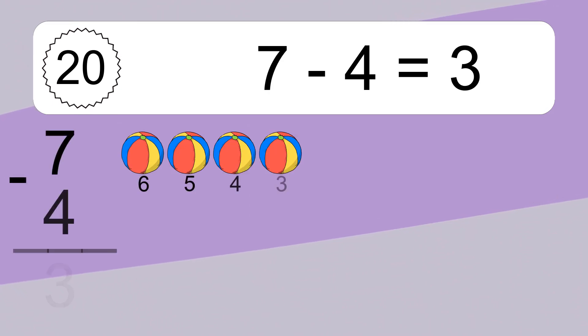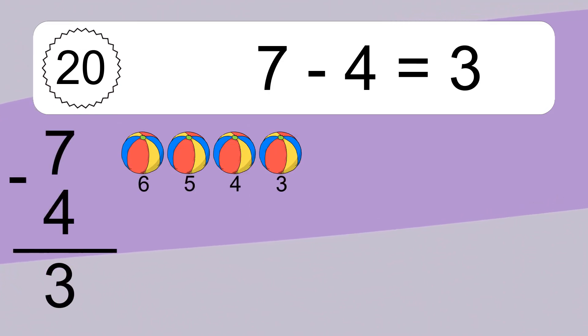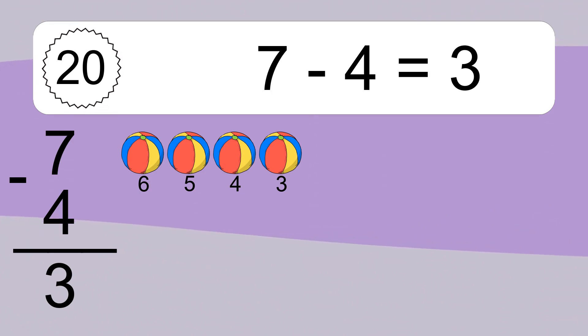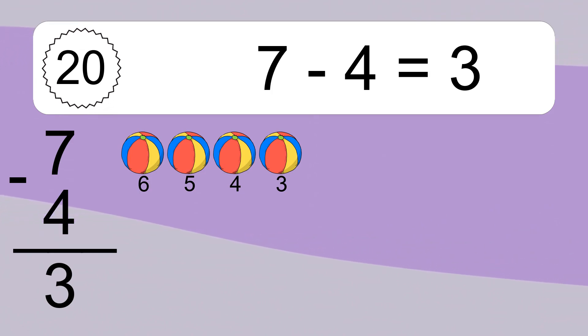7 minus 4 equals what? 7 minus 4 equals 3. Let's count it. 6, 5, 4, 3.